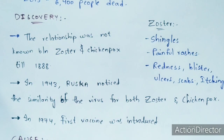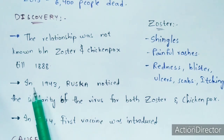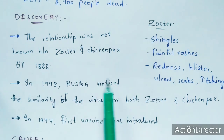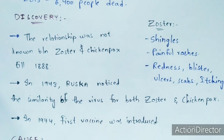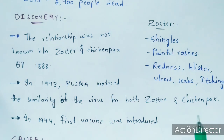Chickenpox has similar symptoms to zoster. The relationship between zoster and chickenpox was not known until 1888. Till 1888 it was confirmed that zoster and chickenpox are both related. Later in 1943, Rasca, a scientist, noticed the similarity of the virus for both zoster and chickenpox. In 1974, the first vaccine was introduced for chickenpox, called the varicella vaccine.